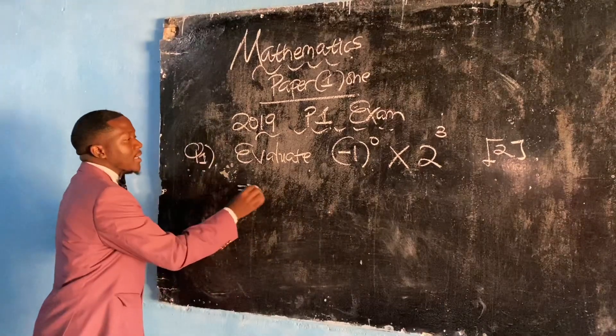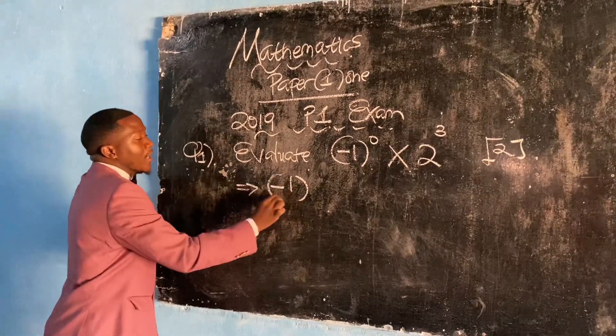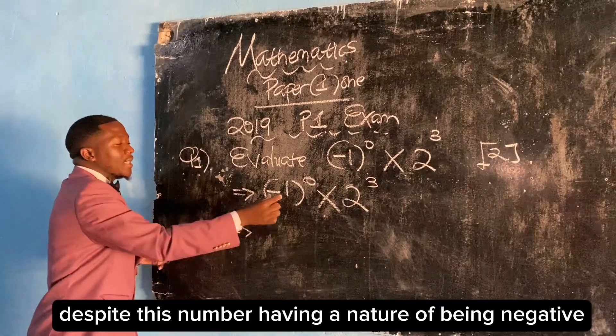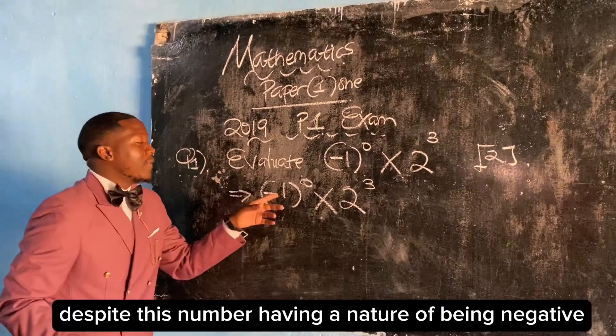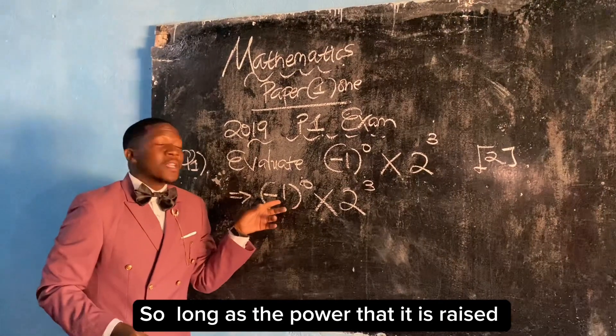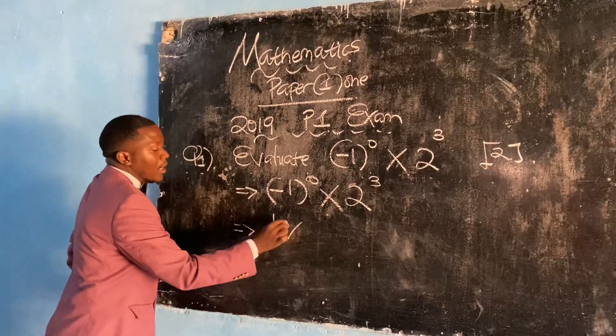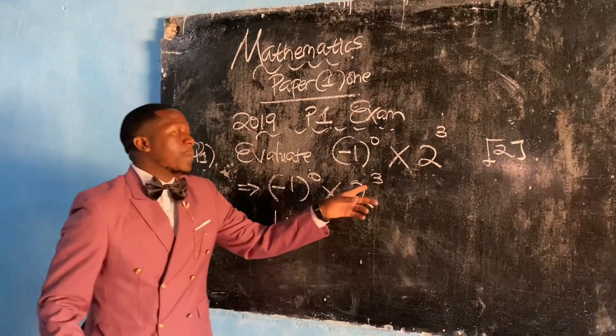We're going to find that this is (-1)^0 × 2^3. Despite this number having a negative nature, so long as the power that it is raised to is 0, this is always 1, then multiply it by 2^3.